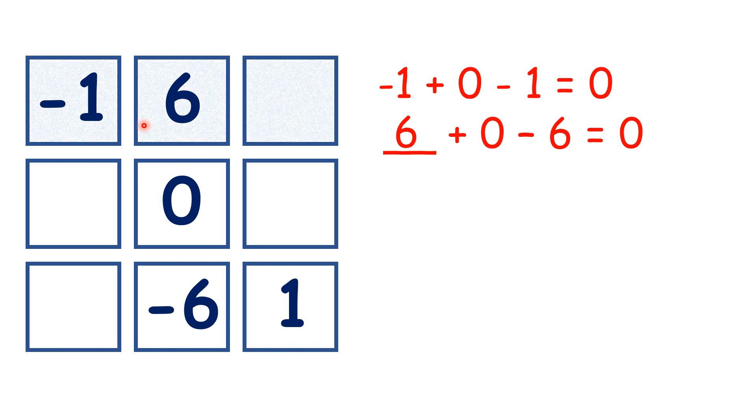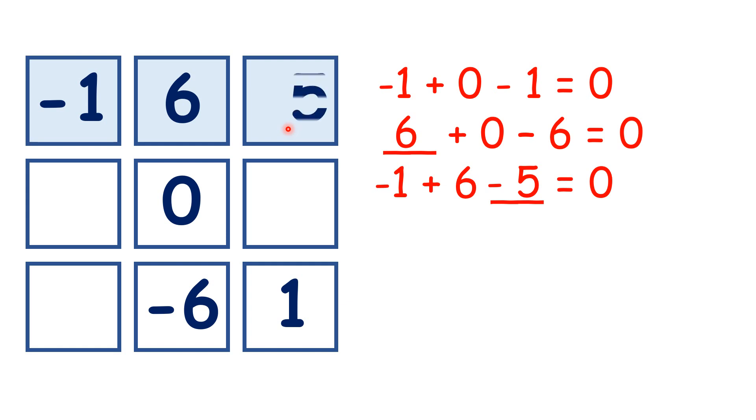Now we have minus 1 plus 6, then plus or minus our missing number to make 0. Minus 1 plus 6 is 5, so to get 0 as our total, our missing number must be minus 5.